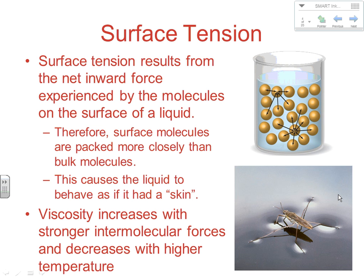Surface tension results from a net inward force of attraction experienced by molecules on the surface of a liquid. A molecule in the middle has intermolecular forces in all directions that balance out, but on the surface there are no attractions in an upward direction. That imbalance of force must be overcome to enter the liquid. Surface molecules are packed more closely together and are actually more dense, causing liquids to have a skin.